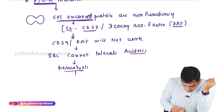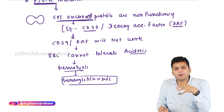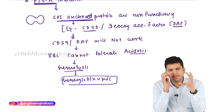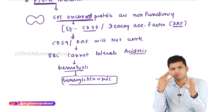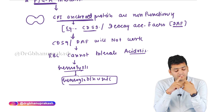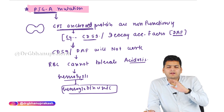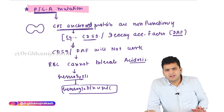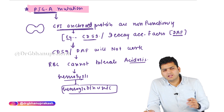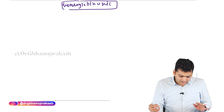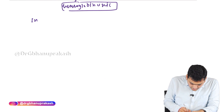The RBC cannot tolerate the midnight acidosis and undergoes hemolysis, causing hemoglobinuria the next morning. This entire pathology is referred to as paroxysmal nocturnal hemoglobinuria — the hemolysis occurs at night and is evident the next morning. The basic pathology is the PIGA gene mutation, leading to non-functioning GPI-anchored proteins (DAF and CD59), causing RBC rupture. We have a test called Ham's test that is done to make the diagnosis.